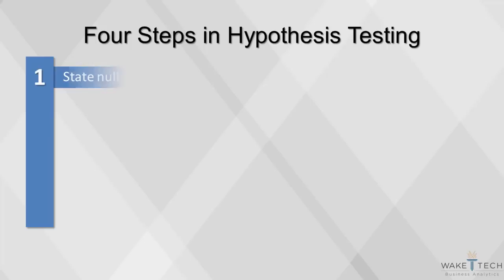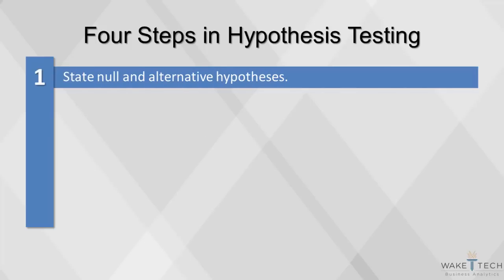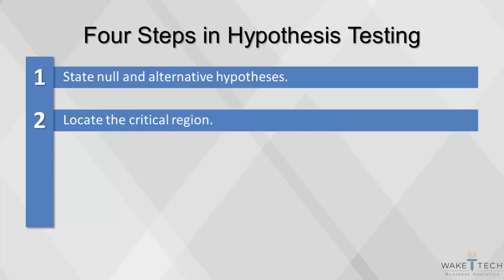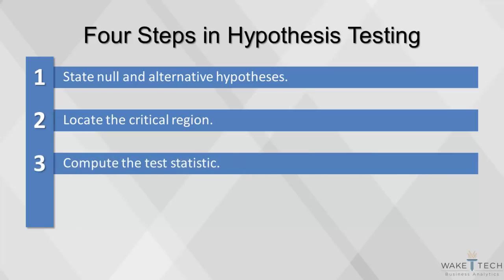The first step is stating the null and alternative hypotheses. We have to establish what we are testing to be true. Once we do that, we have to decide how close to true our sample statistic has to be for us to accept the truth. For example, we might want our estimate to be accurate with a 5% margin of error. This is called locating the critical region. Once we know that, we have to compute the test statistic — the z value or the t value. Finally, based on our results, we draw conclusions from the study.